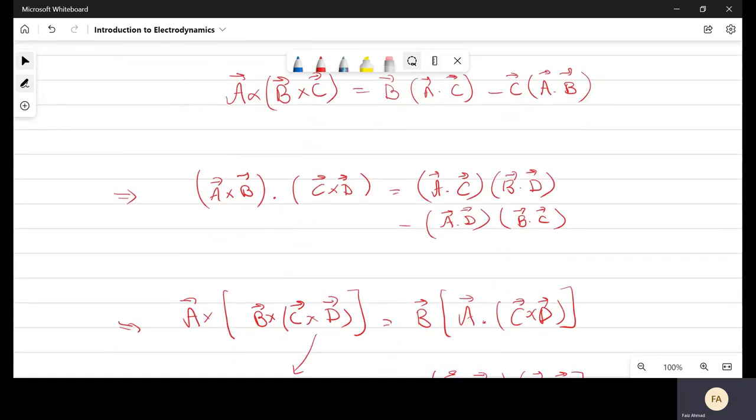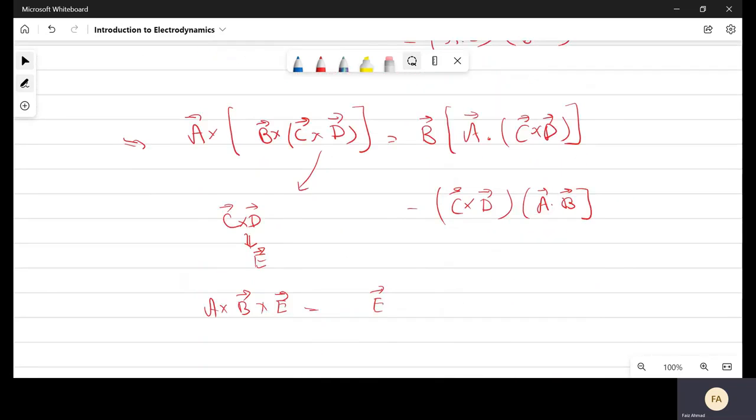Using the backcap rule, we have to bring B times A dot E minus E times A dot B. So we have to put E back and we will reach the simplified form for four vectors.